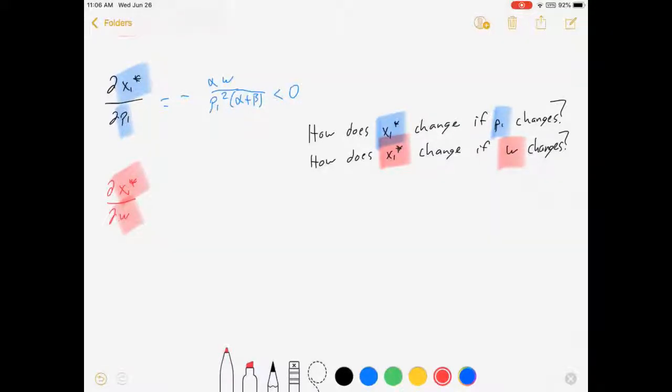And this one just equals alpha over p1 times (alpha plus beta), which is greater than zero. And again, based on parameter values, I can have a specific value giving me a specific rate and allowing me to make useful predictions.